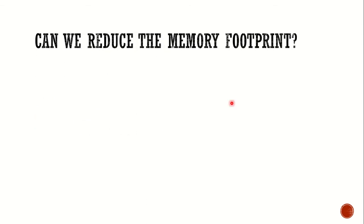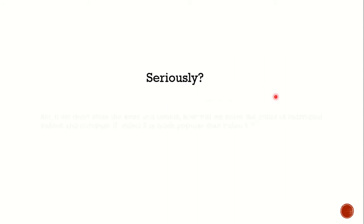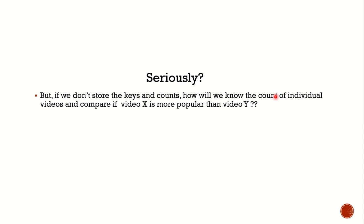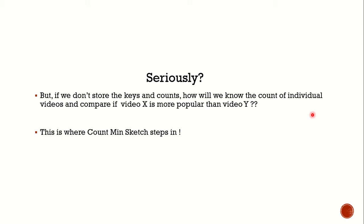So, can we reduce the memory footprint? The surprising approach is by not using a hash map at all. But if we don't store a hash map and don't store the keys and the counts, that opens up a new question: how will we know the count of individual videos? And how will we compare if video X is more popular than video Y? This is where Count Min Sketch steps in.